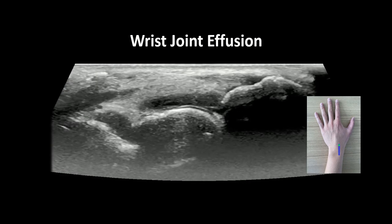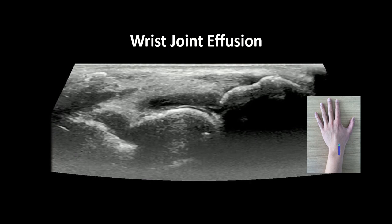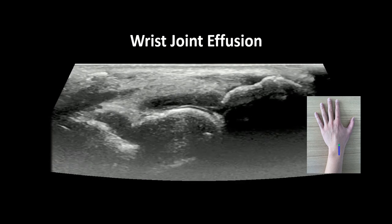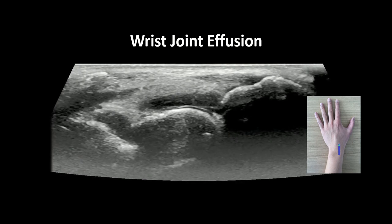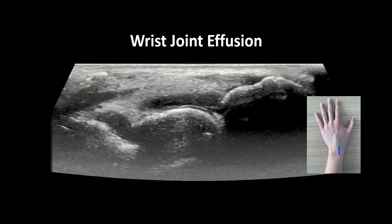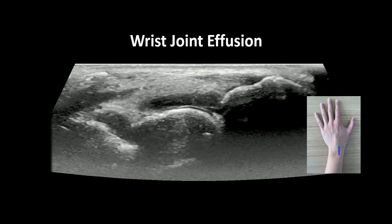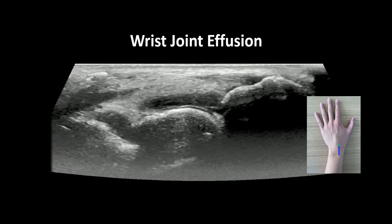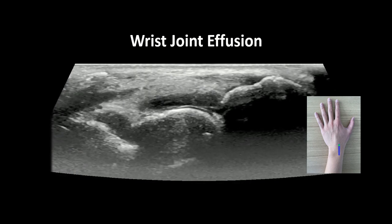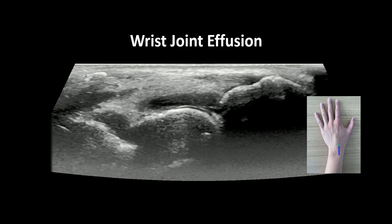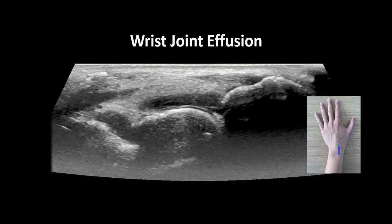In patients presenting with atraumatic wrist pain, the physical exam can often be limited by significant pain and swelling. Ultrasound can help narrow the differential between cellulitis, abscess, or joint effusion. It can further be used either statically or dynamically to guide arthrocentesis and help determine the etiology of the effusion.